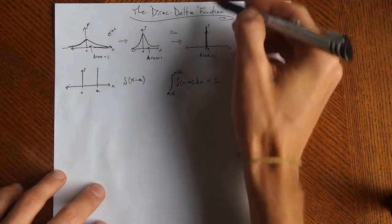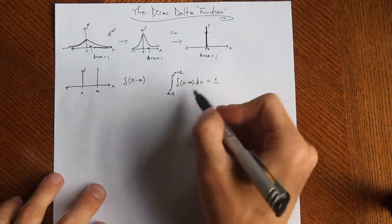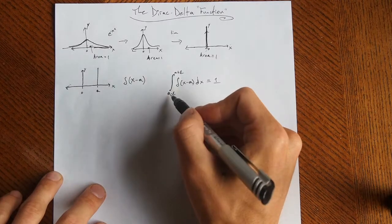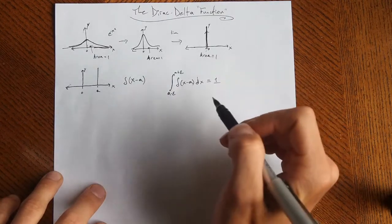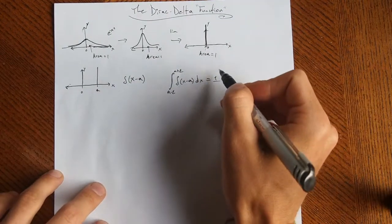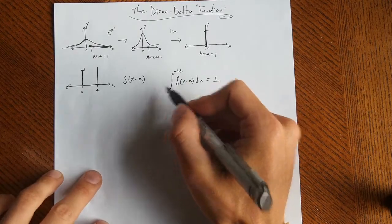All of the area of this generalized function is located at the point a, so as long as that is inside of our limits of integration, it's going to equal 1. And of course, you can multiply a constant in front, so if you have 3 times the delta, then the area would be 3, and that just follows from our integration rules - we can just pull the 3 out.